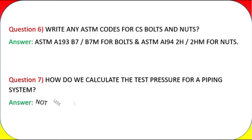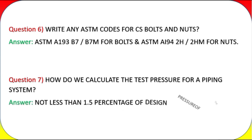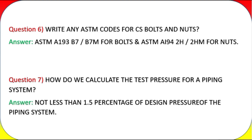Question 7: How do we calculate the test pressure for a piping system? Answer: Not less than 1.5 times the design pressure of the piping system.